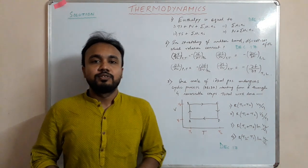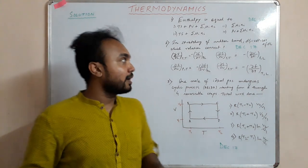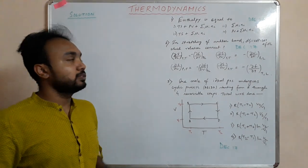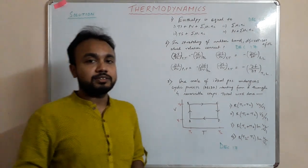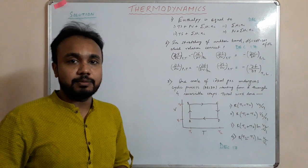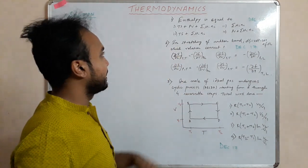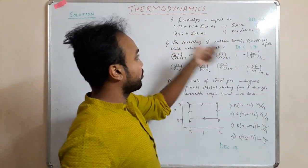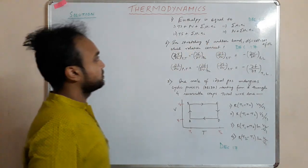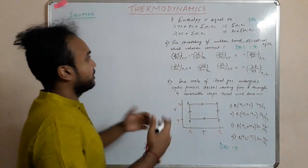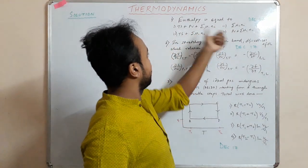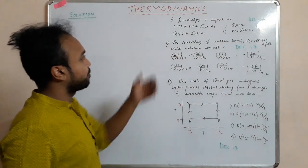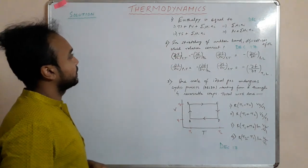Good morning friends. Today I am going to discuss a few numericals based on thermodynamics which have been asked in previous CSIR NET examinations. The first one is about enthalpy — we are given four relations for enthalpy and we have to predict which one is correct.